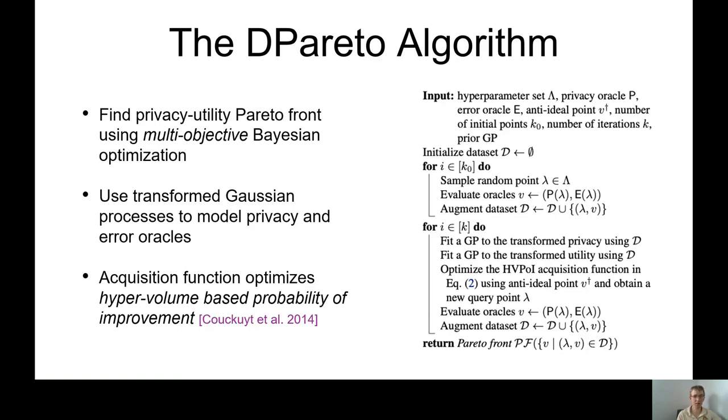The algorithm basically implements the Bayesian optimization loop. So we're given a hyperparameter space, we're given the privacy and utility oracles, and we just start by picking some fixed number of random samples. This way we can bootstrap a surrogate model. Once we've bootstrapped it, we are going to do a couple of iterations, and this time there is a budget of how many times we're willing to evaluate the privacy and utility oracles.